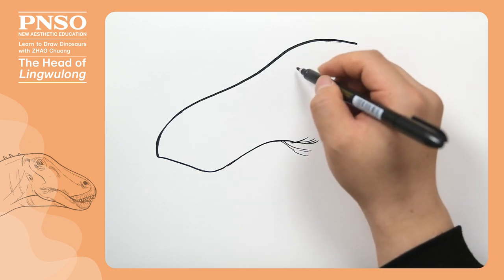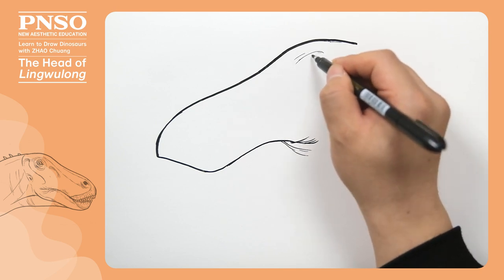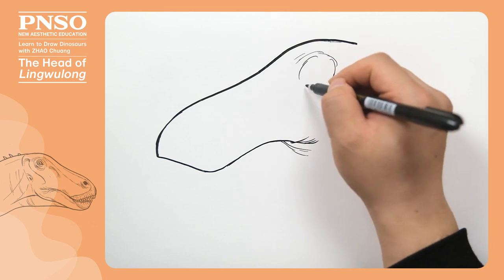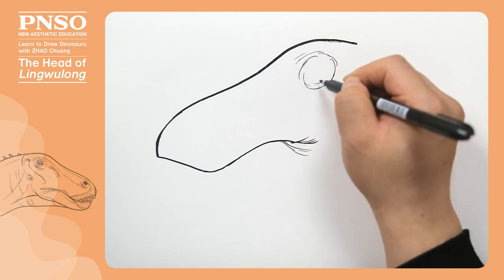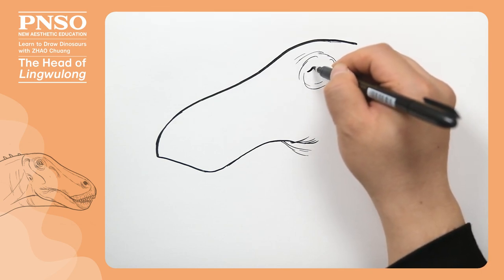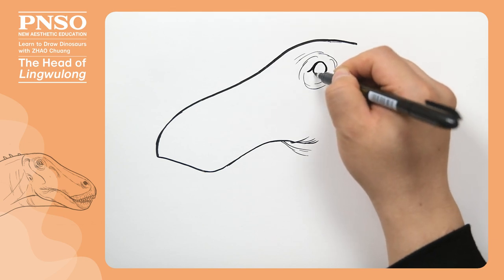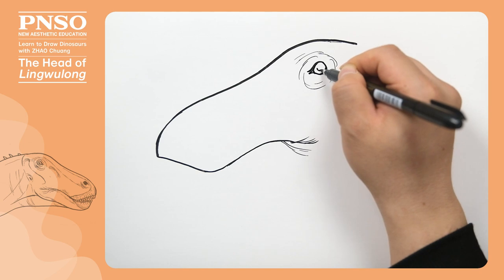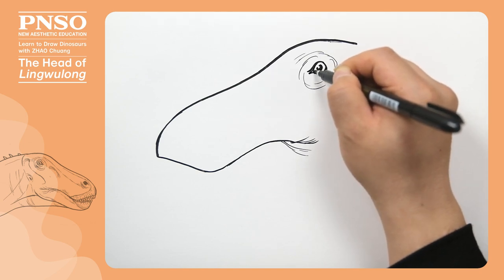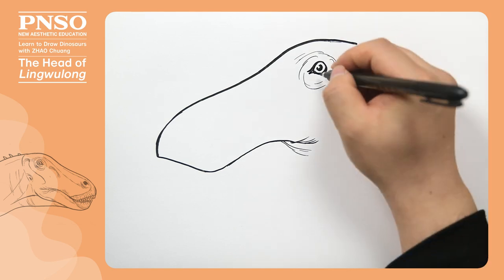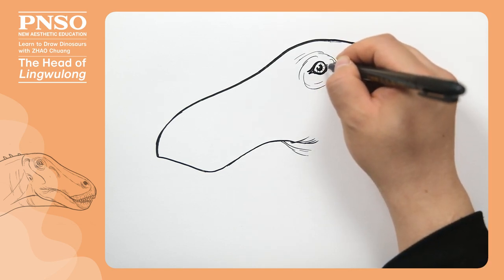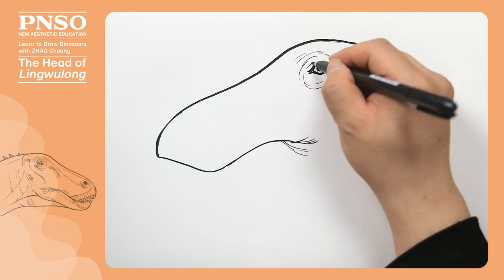Just now, we mentioned the eye situated in this position. We can draw the eyelid, the eye socket, followed by the small round eye. Then let's draw its pupil — we can leave a tiny gap as the highlight. Above the eye, we can draw some fine lines, because its upper and lower eyelids had a pouch-like structure.